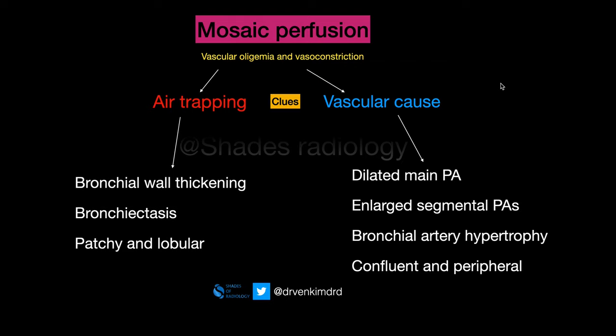So how do we approach mosaic perfusion? Mosaic perfusion is mainly due to vascular oligemia and vasoconstriction, which can happen in both vascular causes as well as in cases of air trapping. The key question is: which imaging features direct us toward air trapping and which features direct us toward a vascular cause?